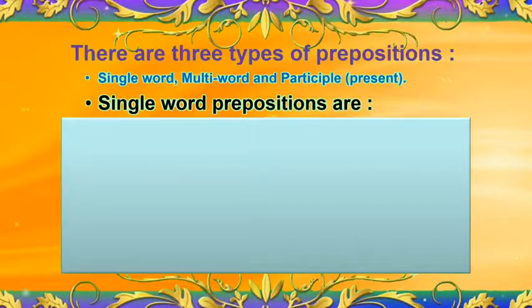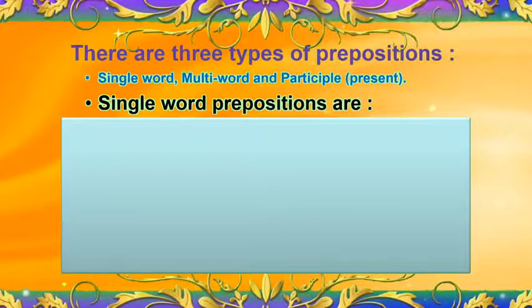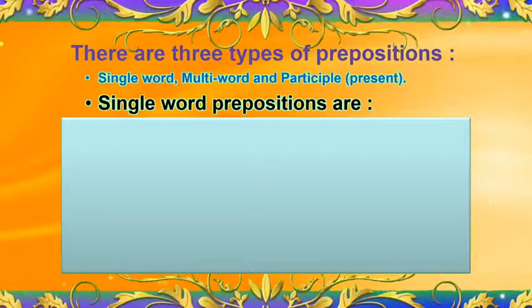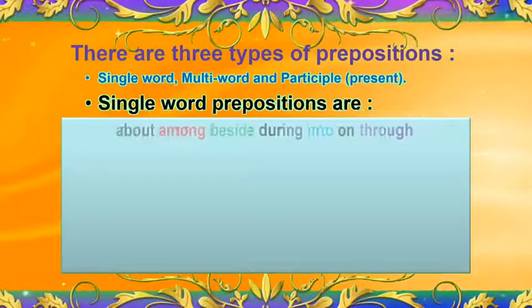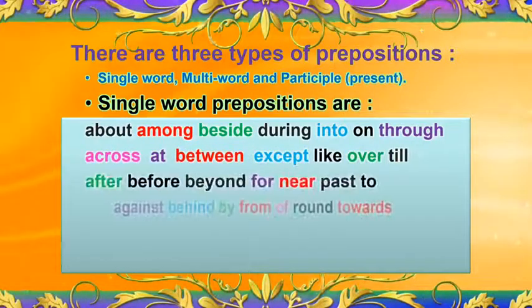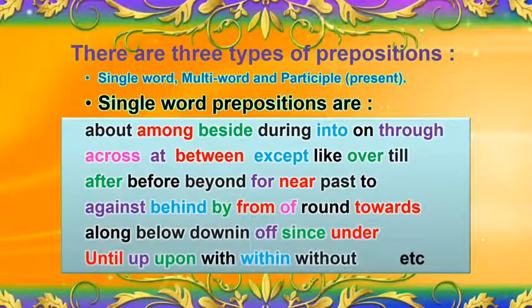There are three types of prepositions: single word preposition, multi word preposition, and participle preposition. Single word prepositions are about, among, beside, during, into, on, through, and many more.